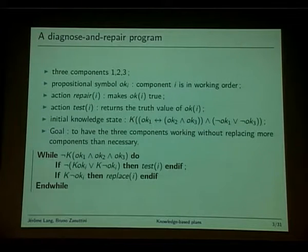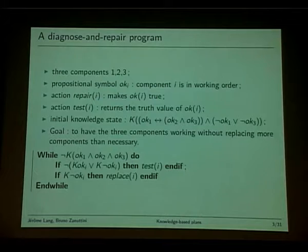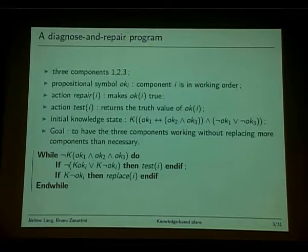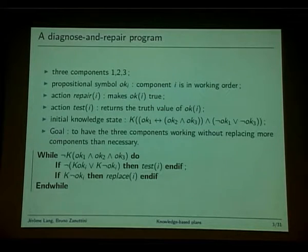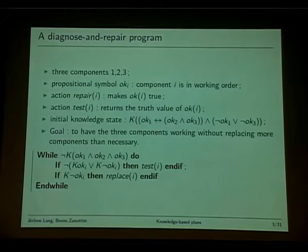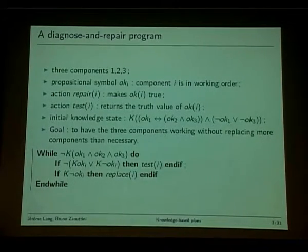The second example is a diagnosis problem. We have three components — each can be okay or not okay, functioning or not functioning. We have a propositional symbol for each: okay_i means component i is in working order. For each component i, we have repair actions that make okay_i true, and a test action which returns the truth value of okay_i, giving the information whether okay_i is true or false.